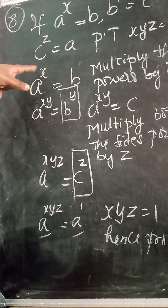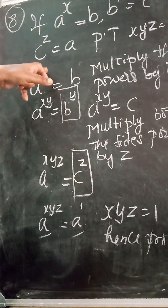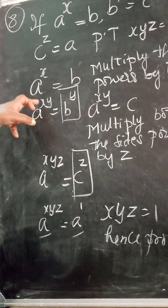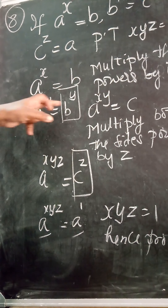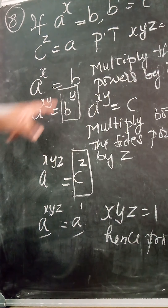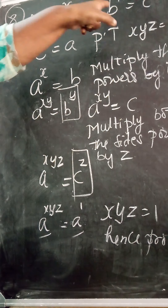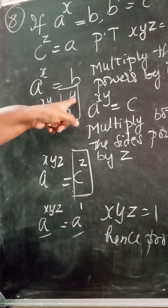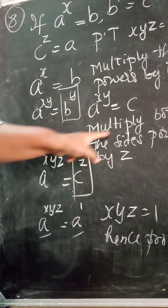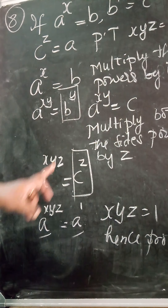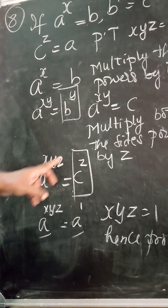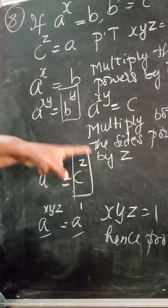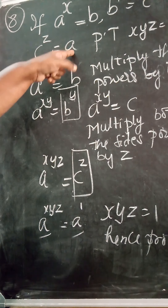Starting again: a raised to the power of x is equal to b. Multiply both sides' power by y. When I multiply, a raised to the power of xy is equal to b raised to the power of y. Now b raised to the power of y is given as c, so I substitute c in place of b raised to the power of y.